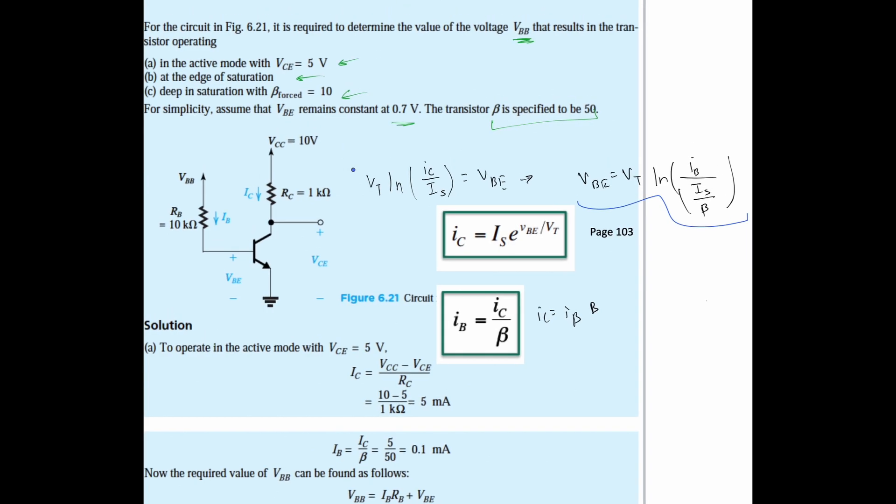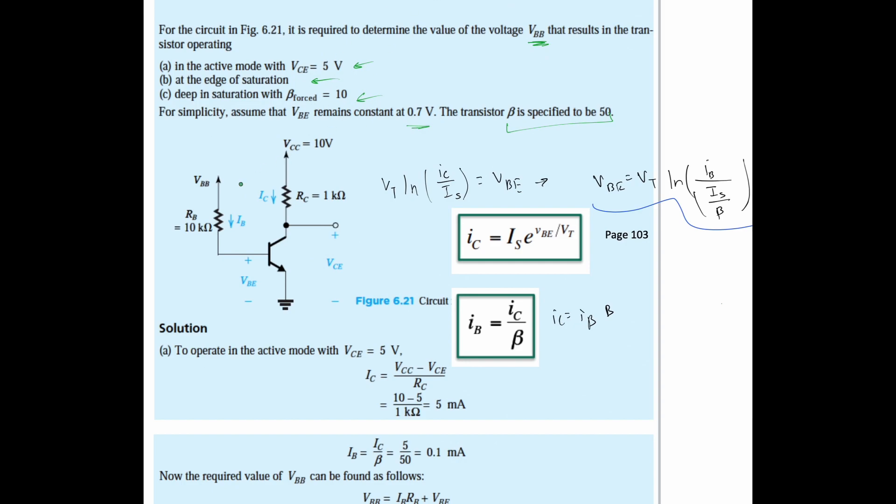We want to find our IC. We're going to take the voltage source minus the voltage at the end point, which is our VCE, so VCC minus VCE over the resistance, which is 1 kilo-ohm. This gives us 5 milliamps.